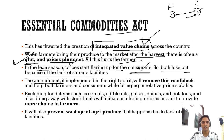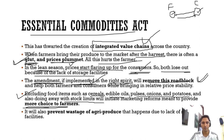The present amendment will rationalize this act. Items like cereals, edible oils, pulses, onions and potatoes will be removed from the essential commodities list and stock limits will also be reformed. This will provide more choices to farmers. If implemented in the right spirit, it will remove this roadblock — enabling private sector investment in storage and warehousing. Both farmers and consumers will benefit from relative price stability, and it will prevent waste of agri-produce due to lack of storage.